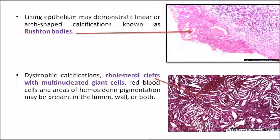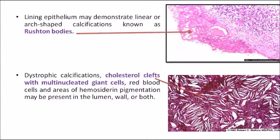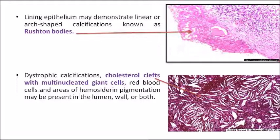Another important histological feature of radicular cyst is cholesterol clefts with multinucleated giant cells. The white cut-out portions seen in histology slides are the cholesterol clefts. Remember these two important MCQ features: Rushton bodies and cholesterol clefts with multinucleated giant cells in radicular cyst.